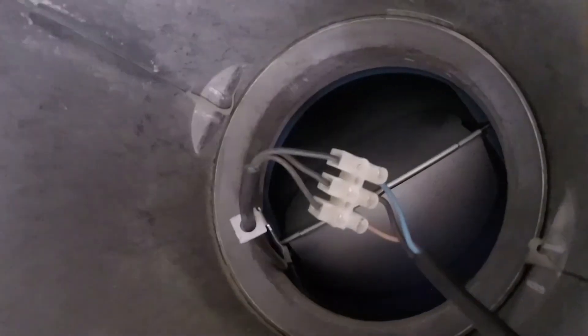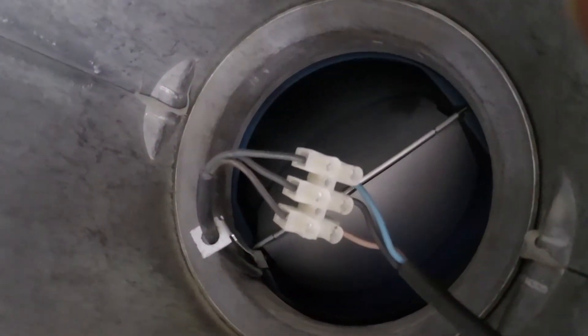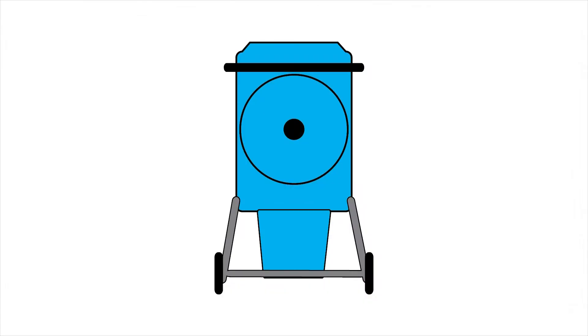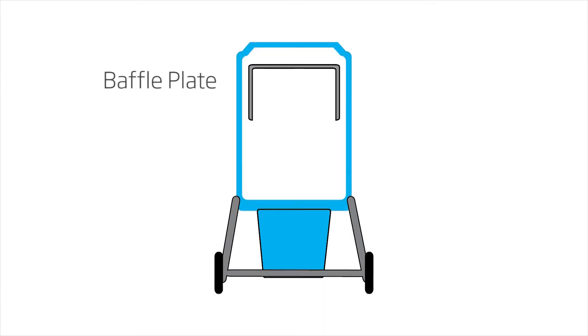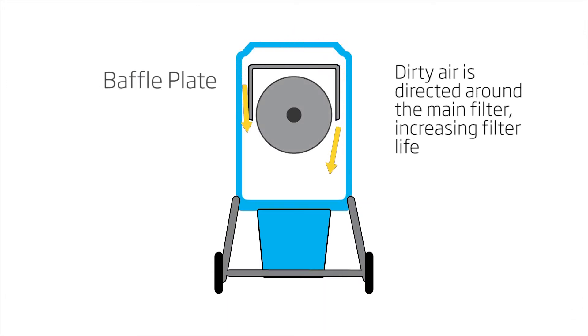Once the air has passed the extraction arm, it enters into the main filter chamber where the air hits a baffle plate. The baffle plate prevents the dirty air from coming in direct contact with the filter and redirects the air to the side of the main chamber.